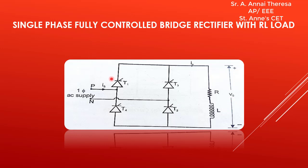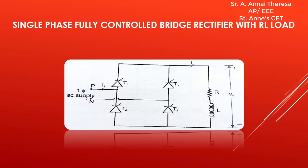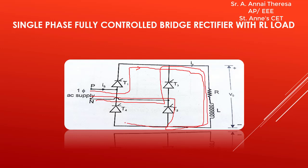During the positive half cycle, the thyristors T1 and T2 will conduct. The current path will be from phase, through T1, then RL load, then T2, then neutral. During the negative half cycle, the current path will be from neutral, through T3, then RL load, then T4, and then phase. So T1 and T2 conduct during the positive half cycle and T3 and T4 conduct during the negative half cycle, and the output appears across the RL load.